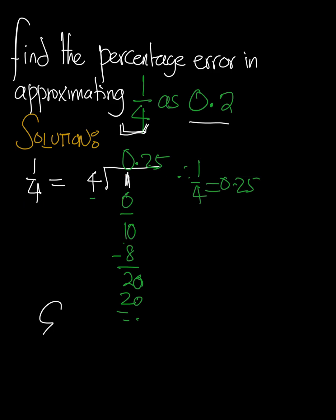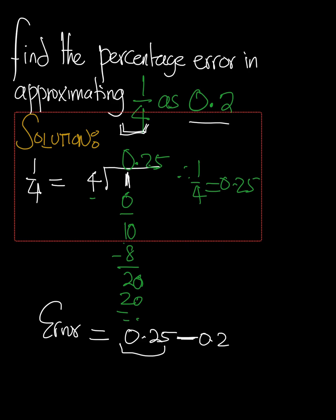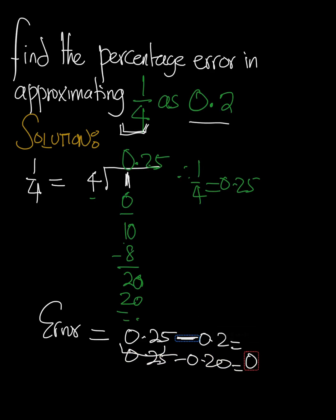That error is actually 0.25 minus 0.2, because it was 1 over 4 and it made it 0.2. That is going to give us 0.25 minus 0.20, and that's going to give us 0.05.